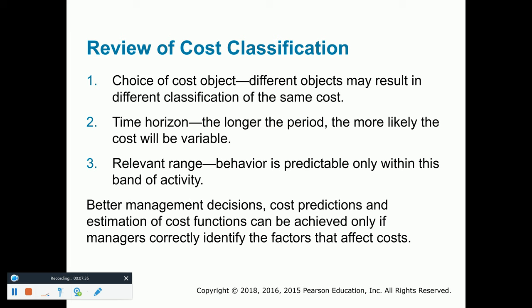In order to classify our costs and better understand budgeting for them, we need to choose our cost object and our time horizon. The longer the period we go out, the more likely a cost will be variable, because ultimately all costs are going to change.